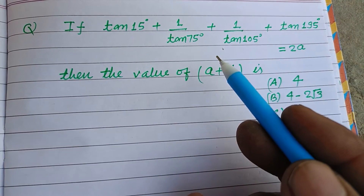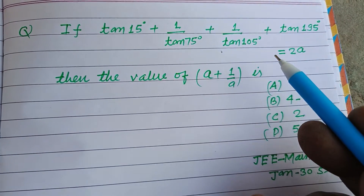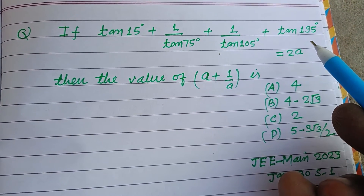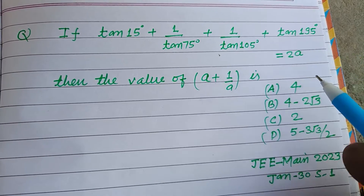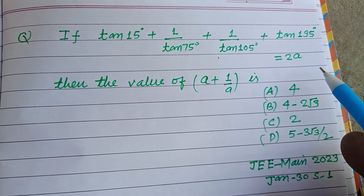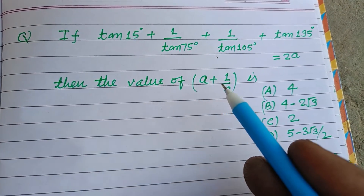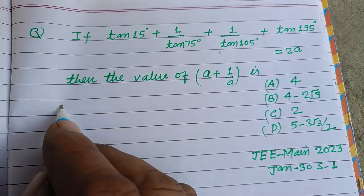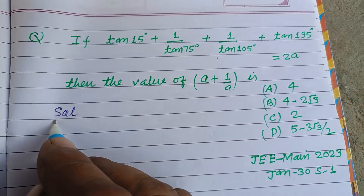If tan15 + 1/tan75 + 1/tan105 + 1/tan195 is given equal to 2a, then find the value of a + 1/a.